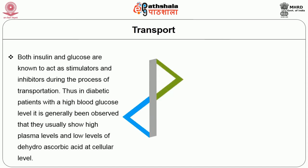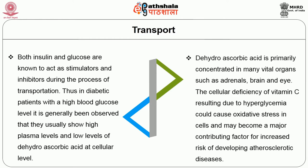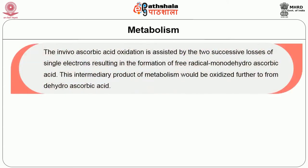Both insulin and glucose are known to act as stimulators and inhibitors during the process of transportation. Thus, in diabetic patients with high blood glucose levels, it is generally observed that they show high plasma levels and low levels of dehydroascorbic acid at the cellular level. Dehydroascorbic acid is primarily concentrated in many vital organs such as the adrenals, brain and eye. The cellular deficiency of vitamin C resulting from hyperglycemia could cause oxidative stress in cells and may become a major contributing factor for increased risk of developing atherosclerotic diseases.